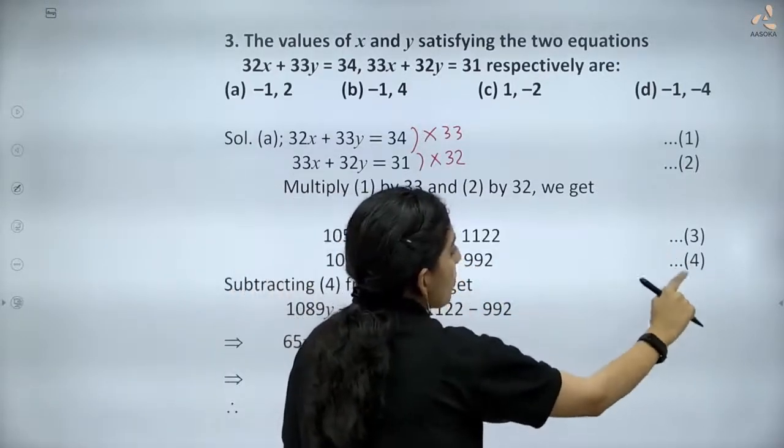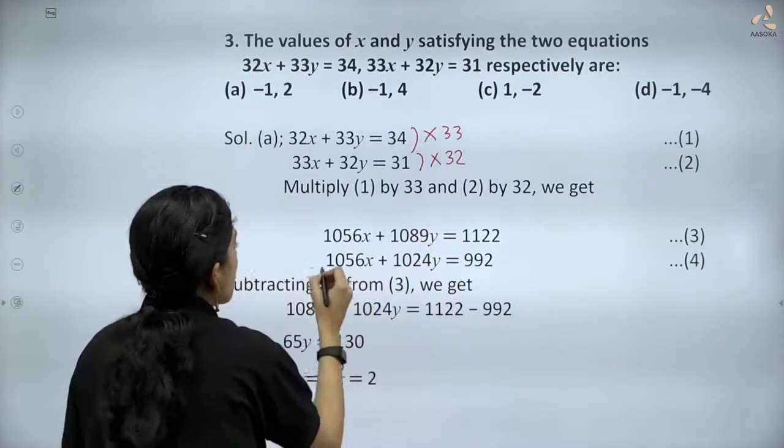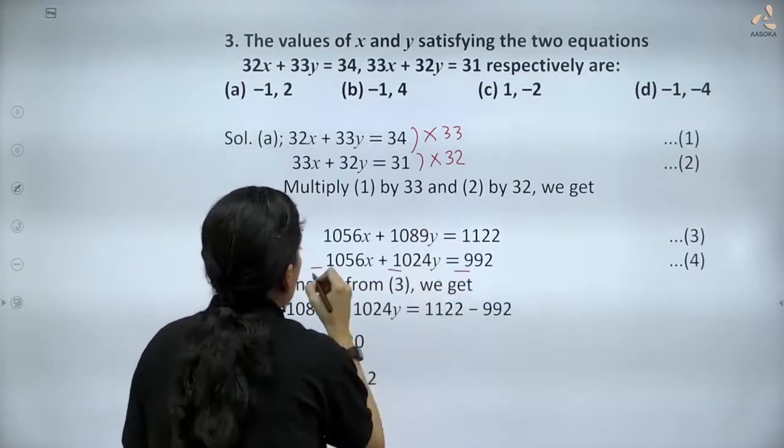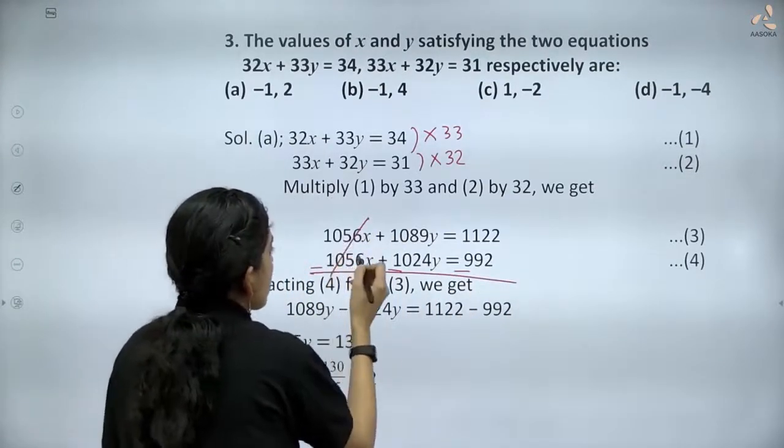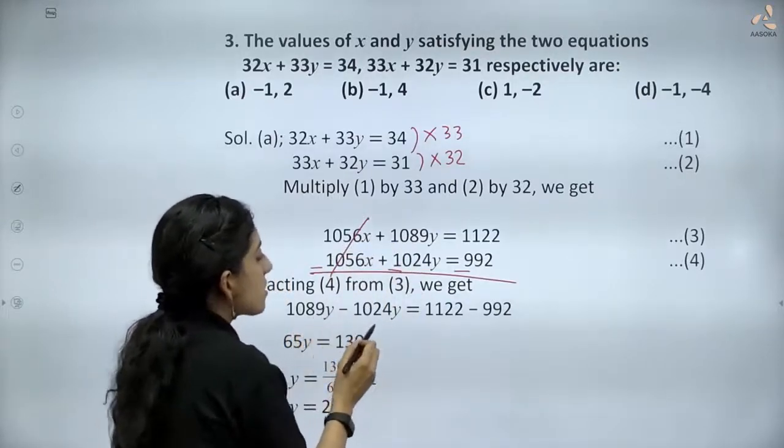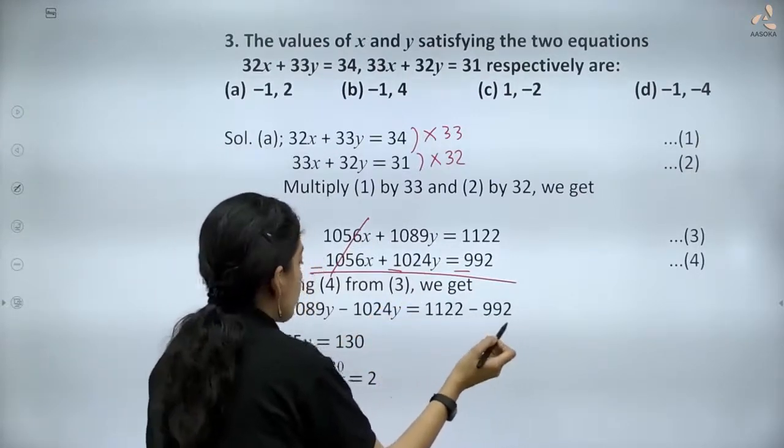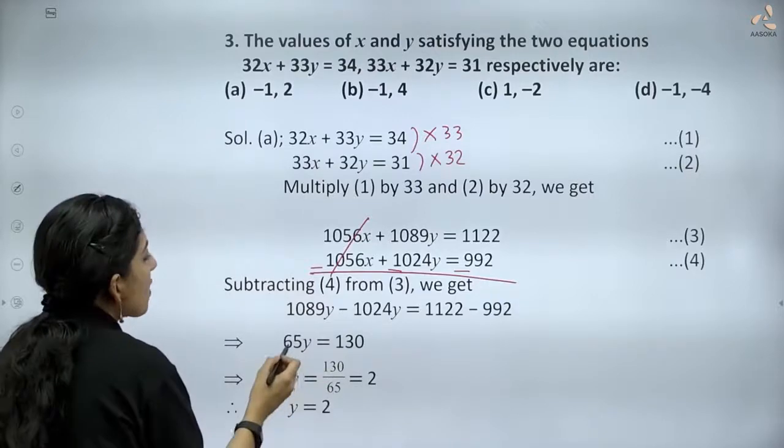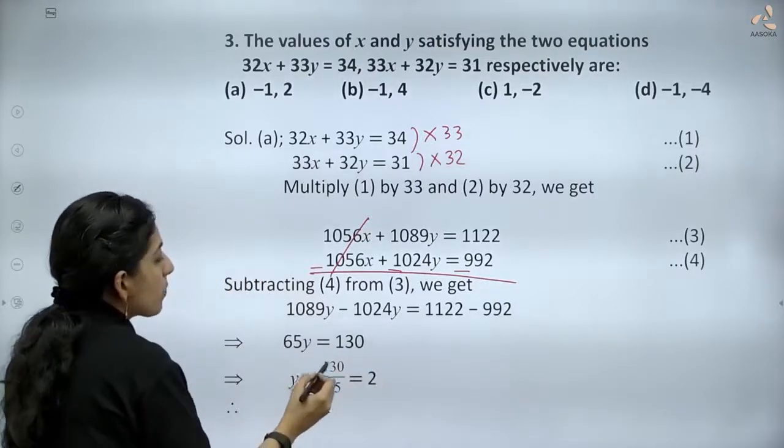The 1056x terms cancel out and we get 1089y - 1024y = 1122 - 992. So 65y = 130, which gives us y = 130/65 = 2.